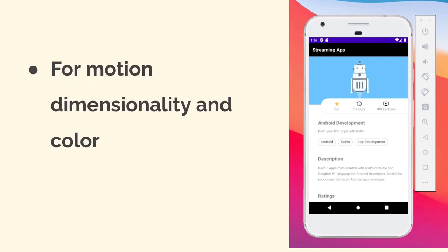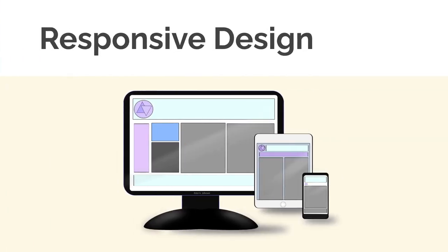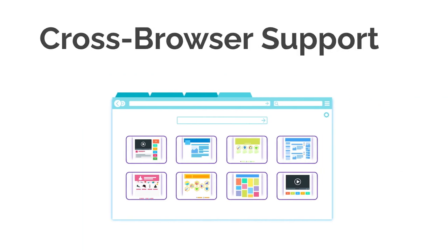Developed by Google, Material Design has been widely used to create all sorts of websites and applications. It's great for motion, dimensionality, and color, providing a simple, flat, and bold user interface. With Material Design and therefore Material UI, you can have responsive design that works on all screen sizes much more easily than building with plain HTML, CSS, and JavaScript. With React and Material UI, you'll find yourself building websites much more efficiently.